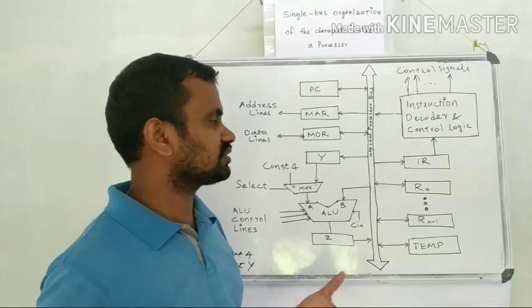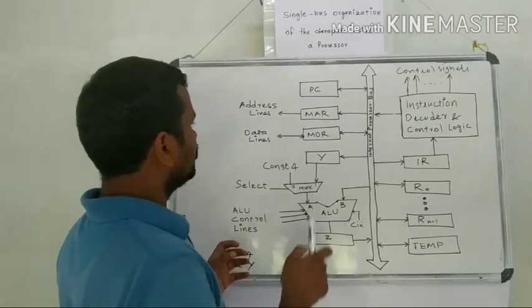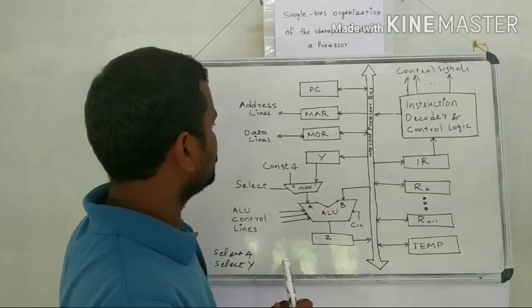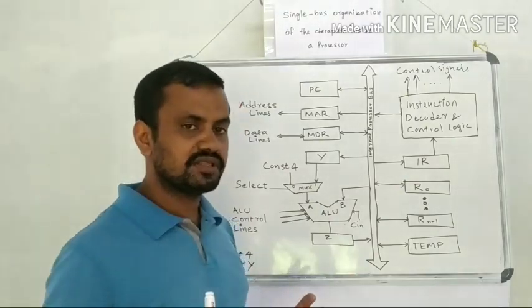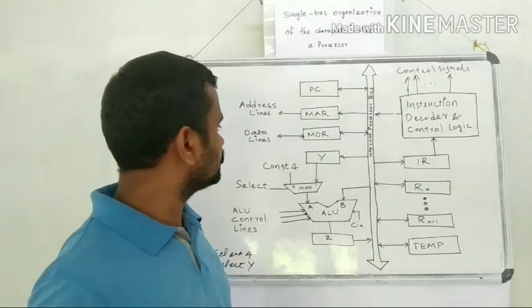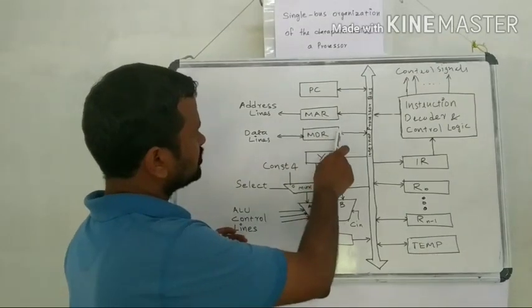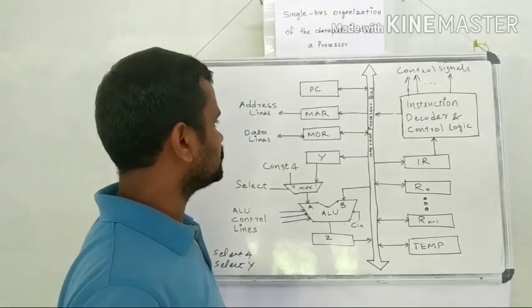Then MAR and MDR. These two registers are used for communicating with the external memory system. One is the memory address register and MDR is the memory data register.